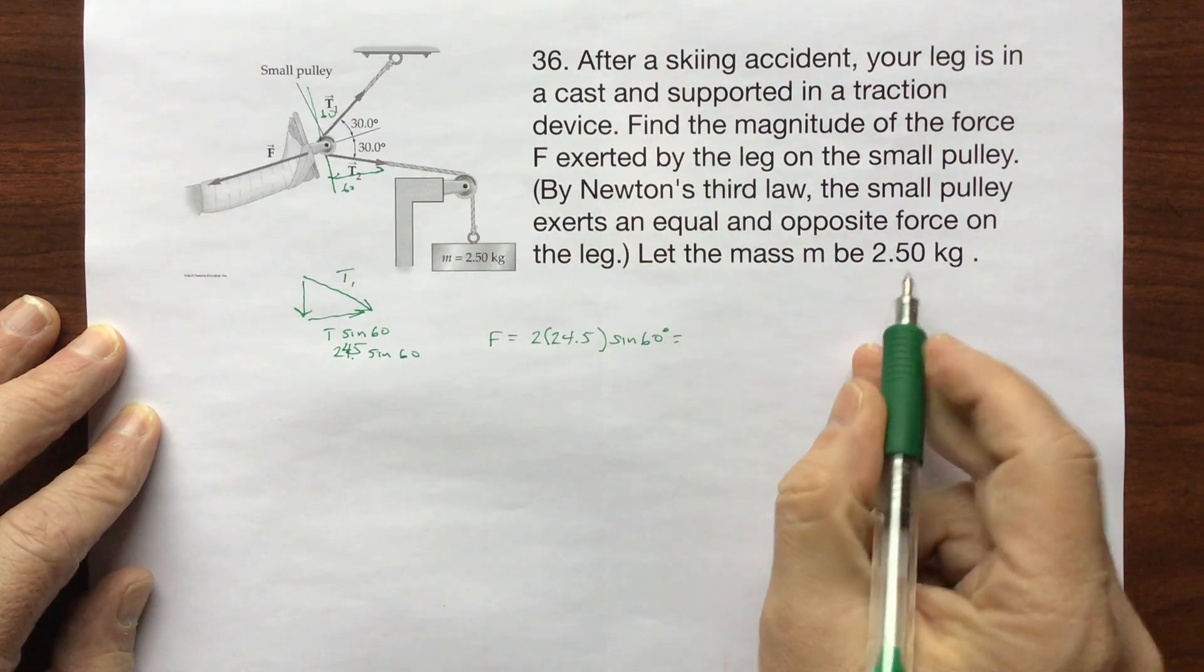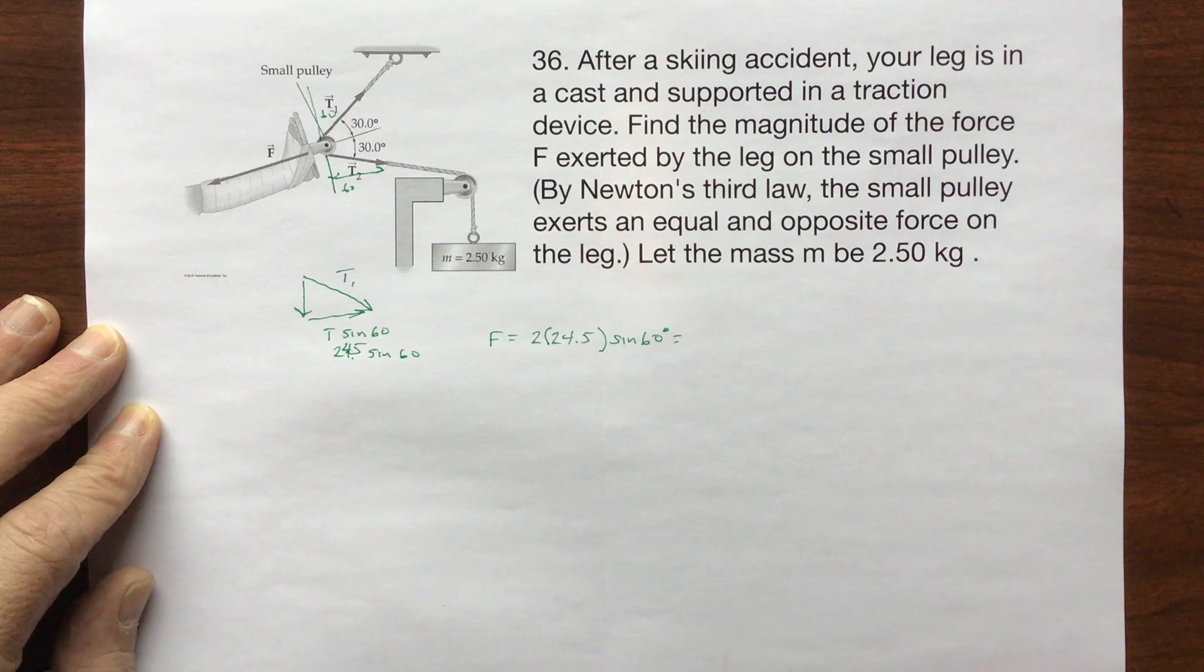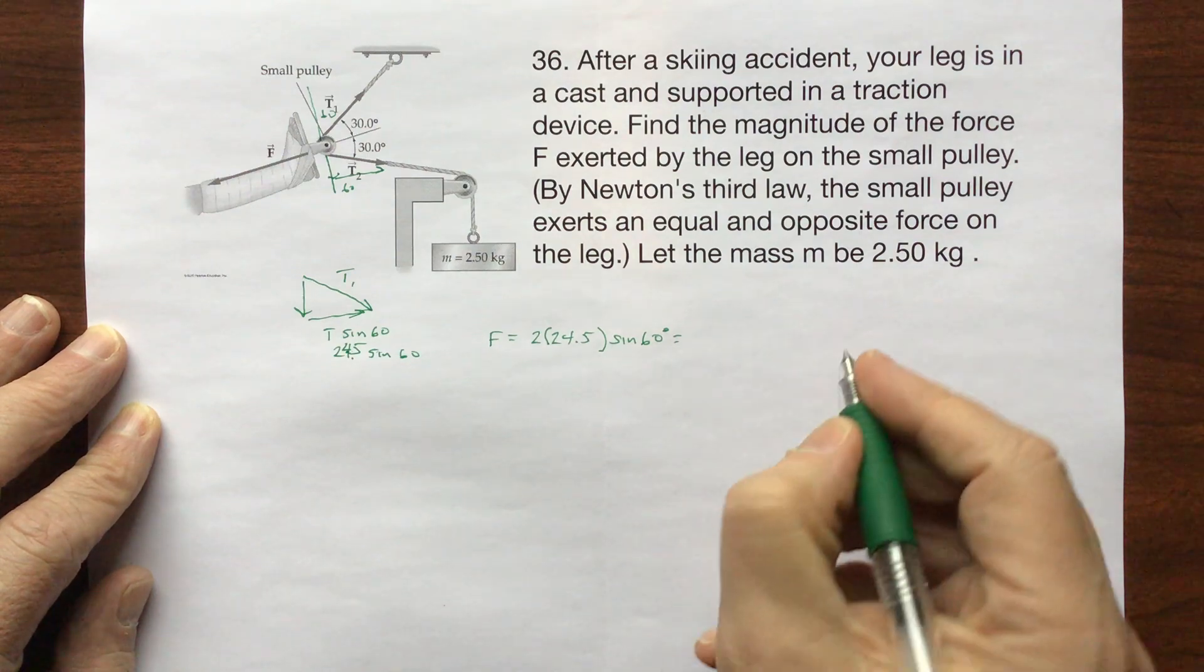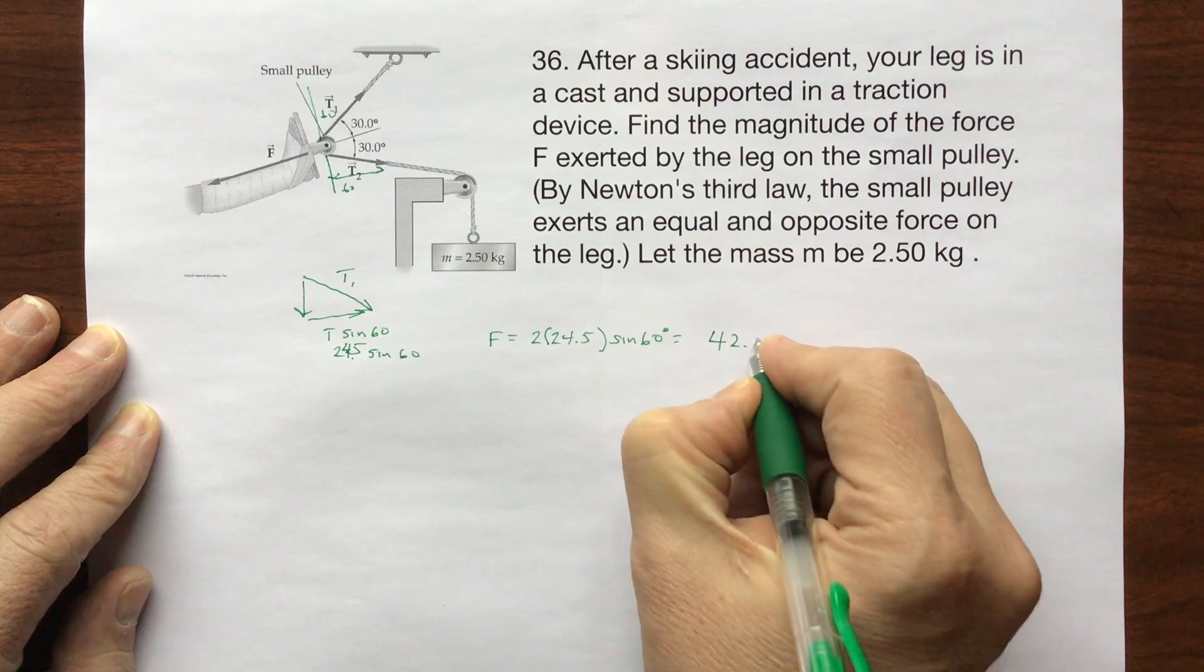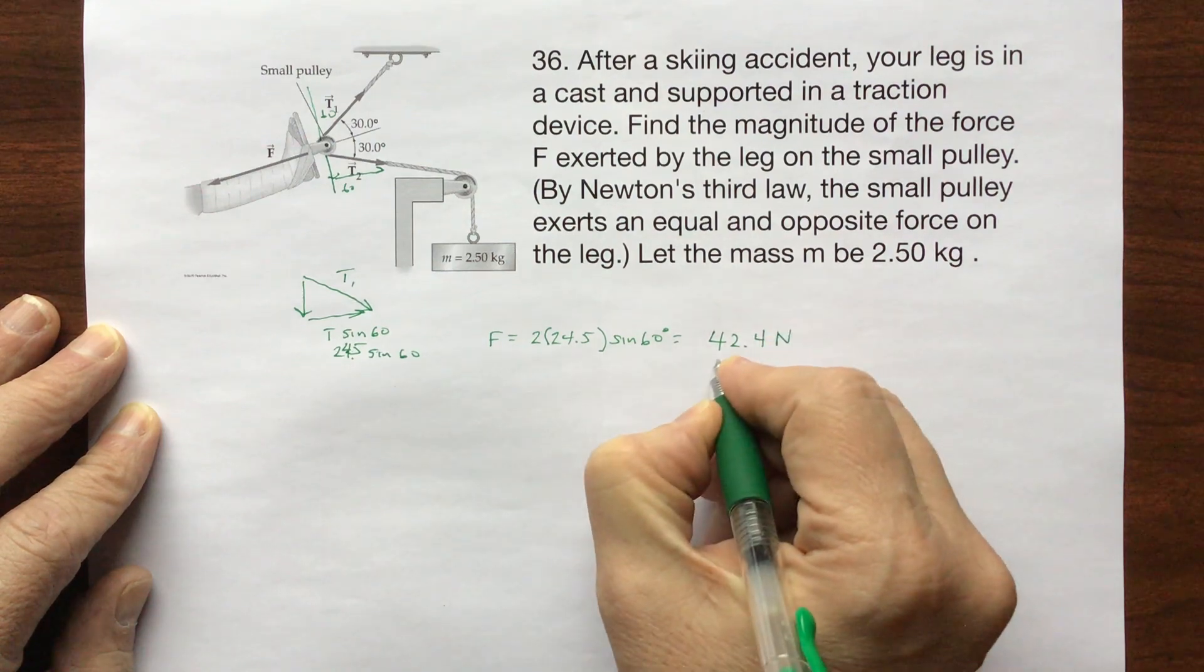It looks like I have three significant digits here. 24.5 times 2 times the sine of 60, and this is going to give me 42.4 newtons.